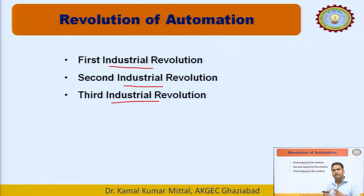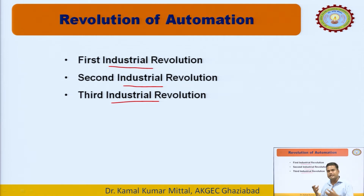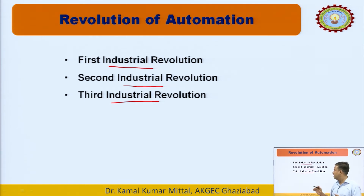As automation at the component level started, we began using transistors and integrated circuits, and the size of computer systems and other components reduced — this is because of automation. In the second industrial revolution, we used assembly lines for mass production. In the third industrial revolution, we used computer systems — programmable systems — where we can save instructions as per the requirement and make changes when a new set of instructions is given.